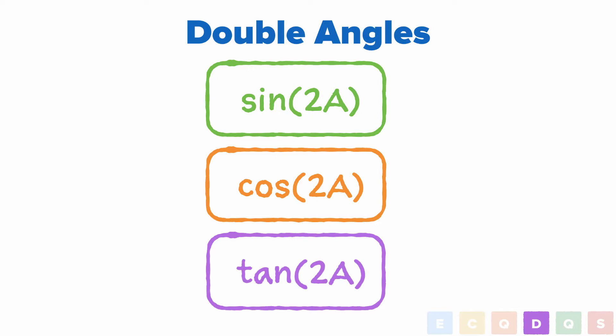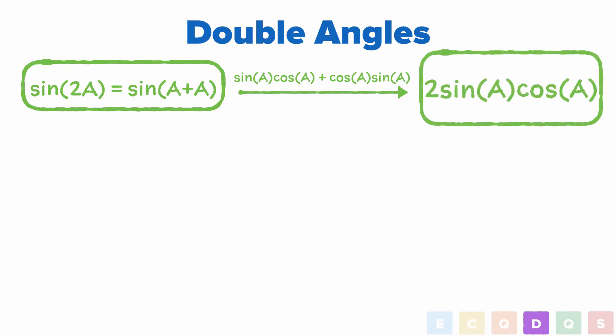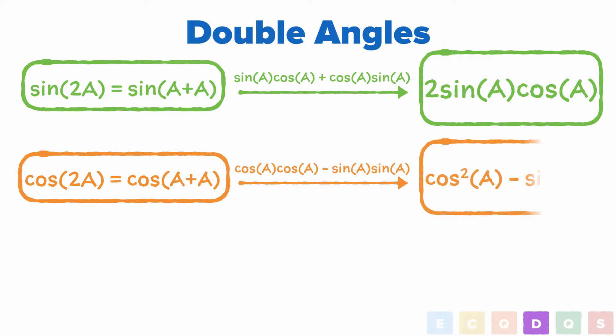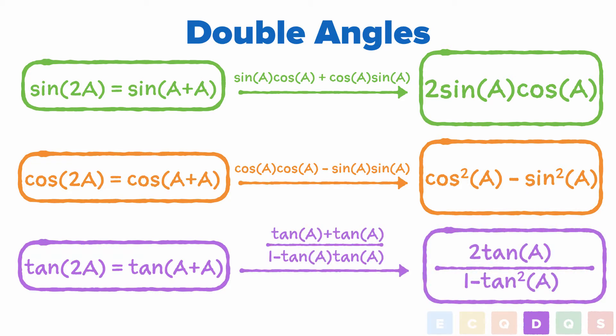So, if we look at the sine of 2a, which is just the sine of a plus a, using our compound angle formula, you can see that we get 2 sine a cos a. If we look at the cos of 2a, which is just the cos of a plus a, using the compound angle formula again, you can see that we get cos squared a minus sine squared a. And if we look at the tan of 2a, which is just the tan of a plus a, you can see that we get 2 tan a all over 1 minus tan squared a.